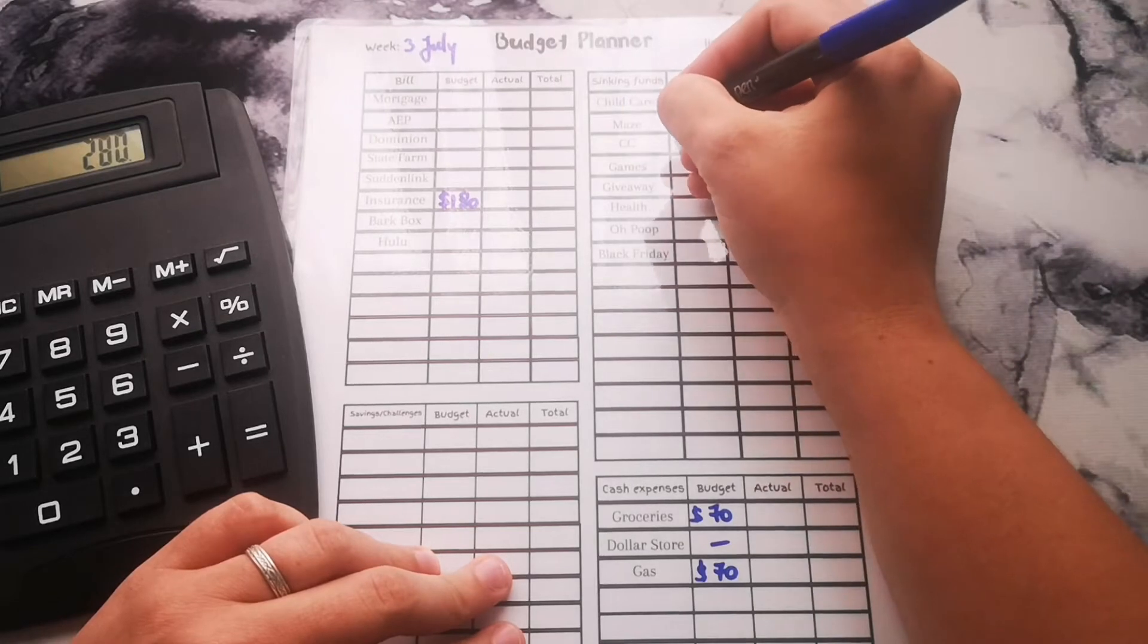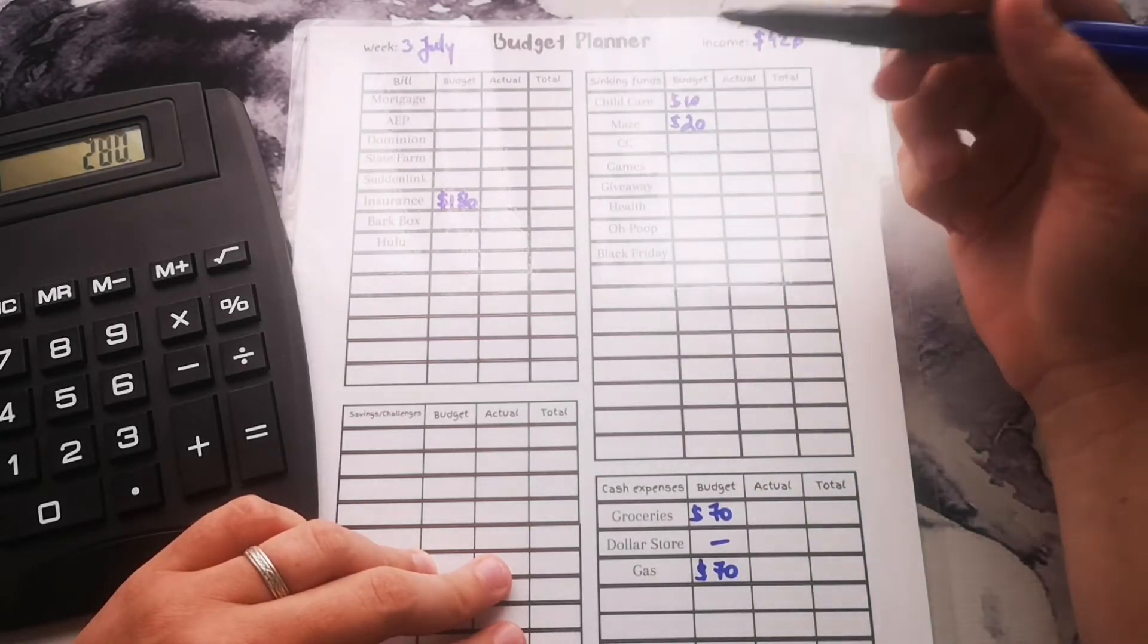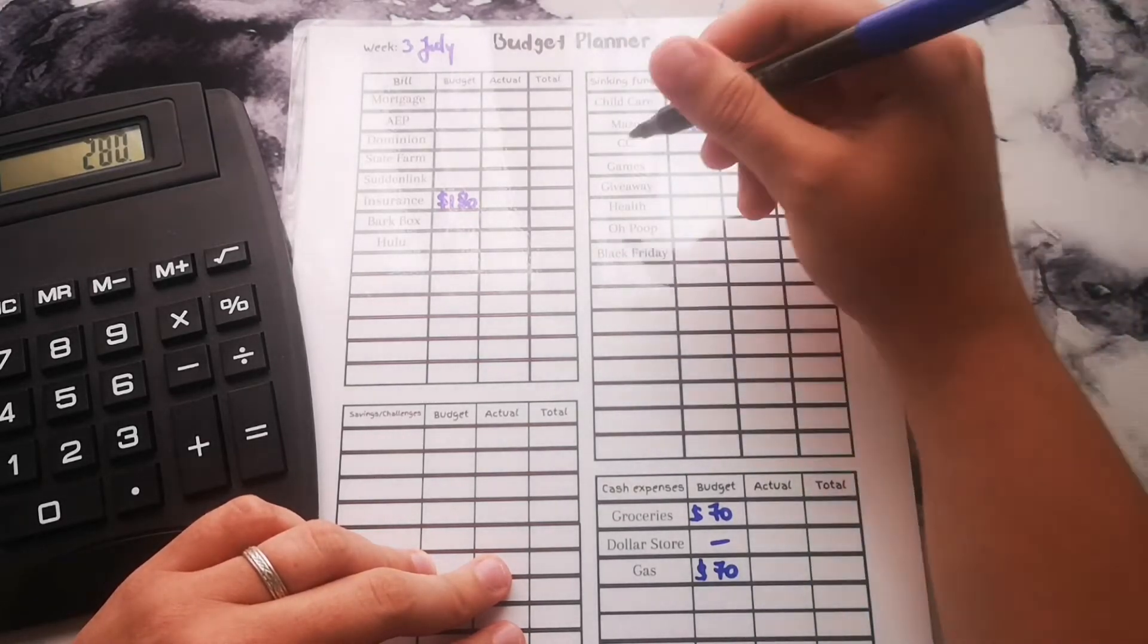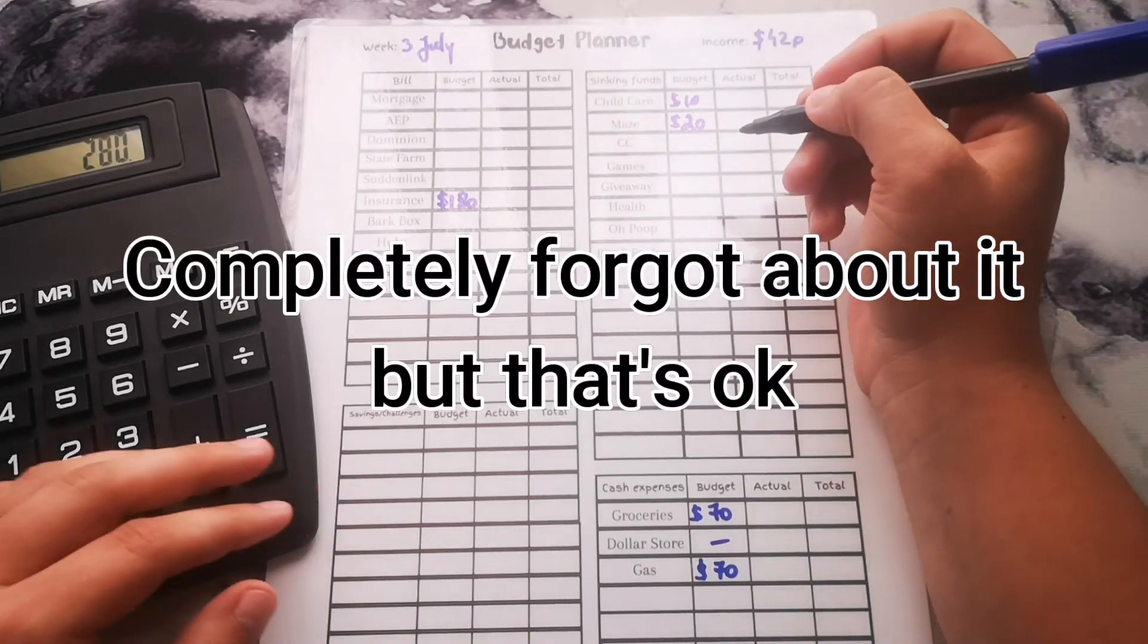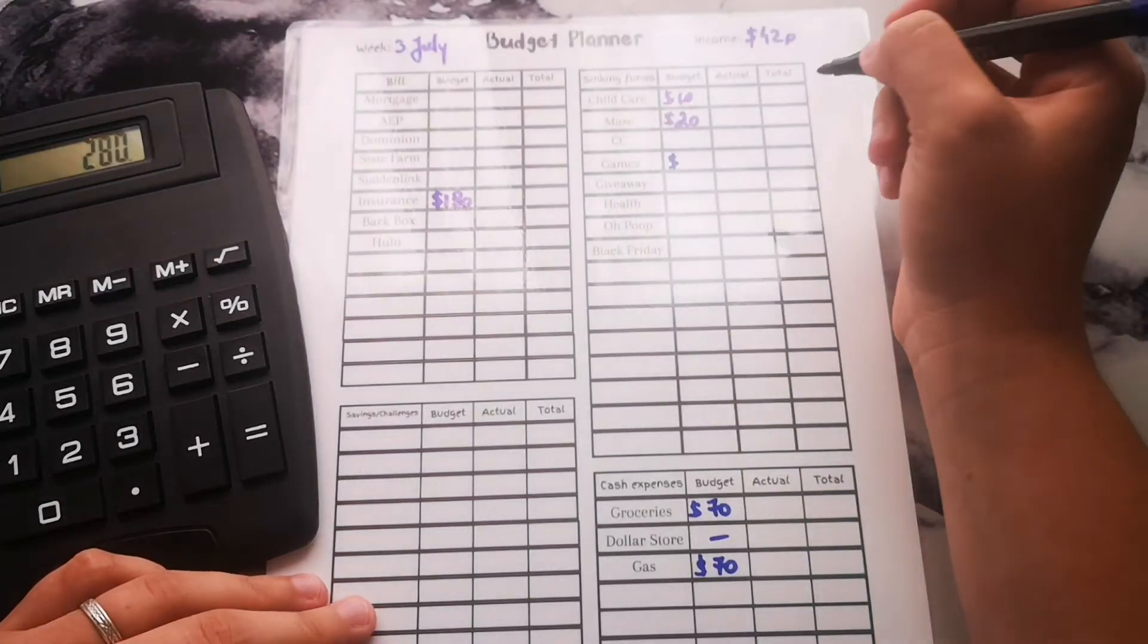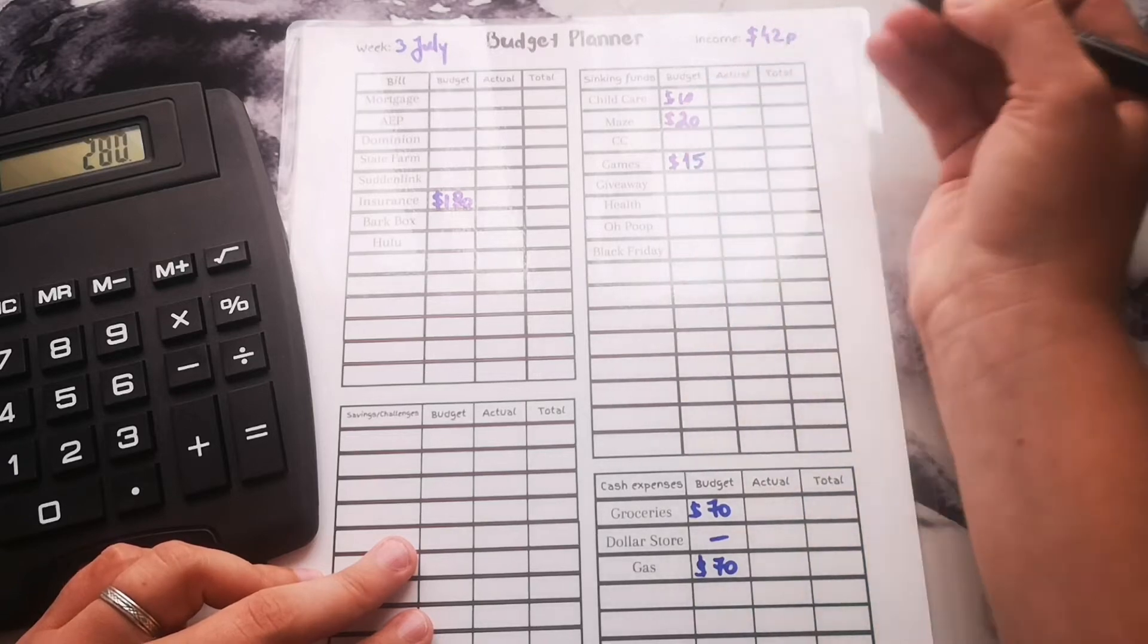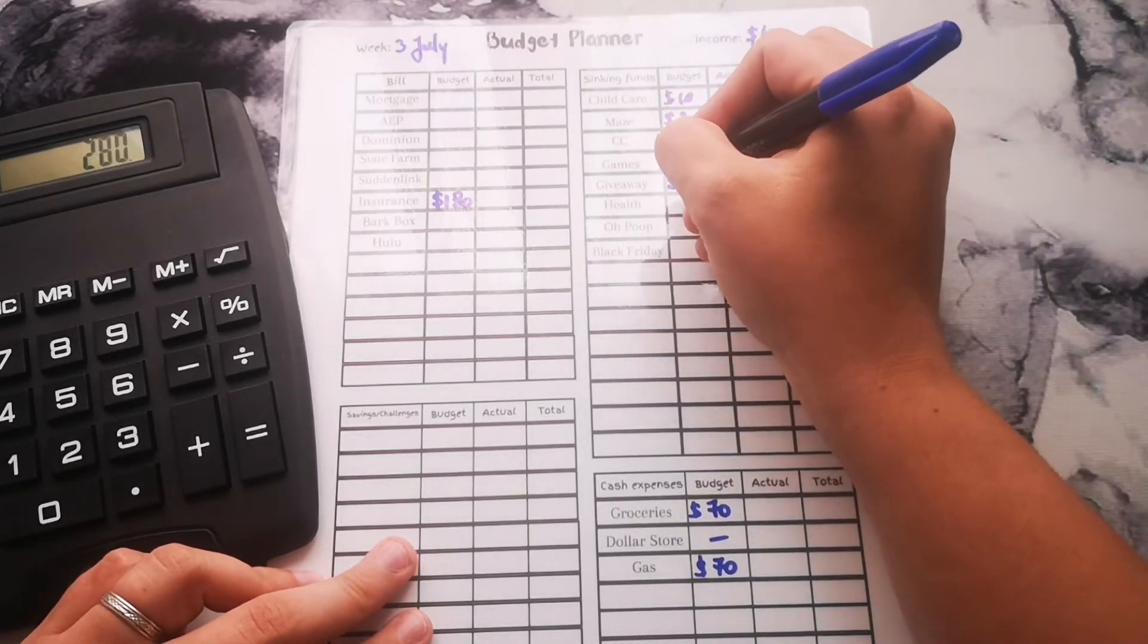Maize is going to get $20. I took some money out of here so I definitely need to build it back up, so I'm gonna put a little bit more in here. Credit card we'll get back to. Games, I'm gonna do $15 in games and then giveaway is going to get $5.